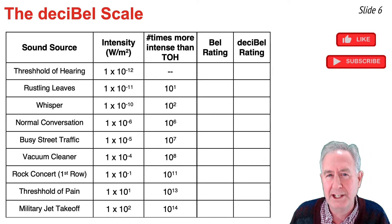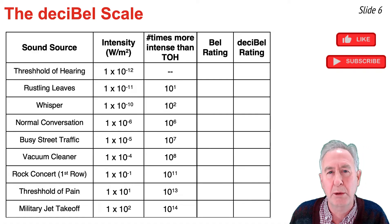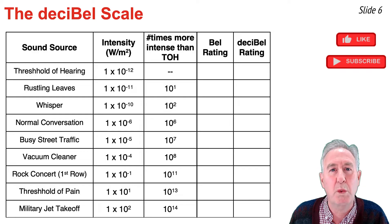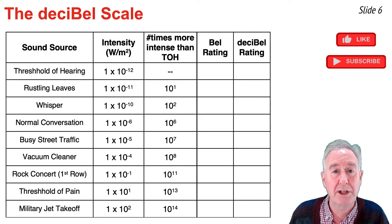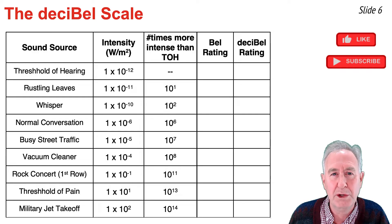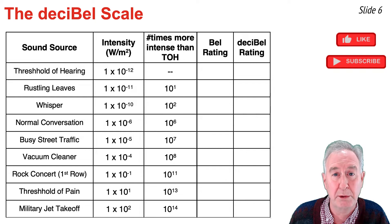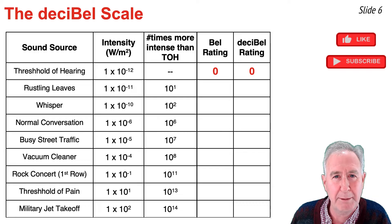The word 'decibel' has the Greek prefix 'deci' in front of 'bell.' It serves the same purpose as the milli of milliliters, the centi of centimeters, and the kilo of kilograms. Deci means one-tenth of a bell, so if a decibel is one-tenth of a bell, the number of decibels will always be 10 times the bell rating. The threshold of hearing is assigned a decibel rating and bell rating of zero.